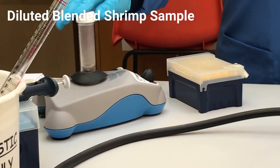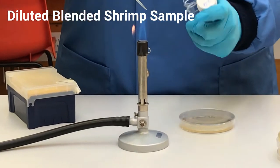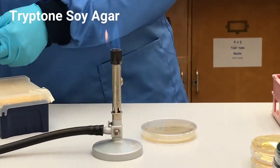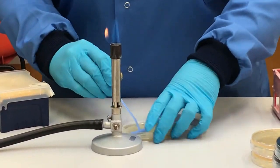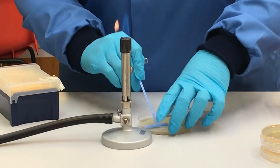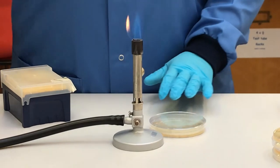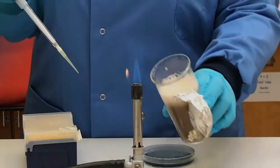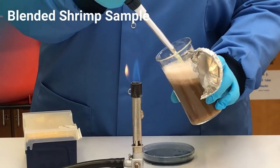Repeat these steps for the other Sample A dilutions, remembering to vortex before removing 0.1 ml from each sample. Repeat the above steps for Sample A.